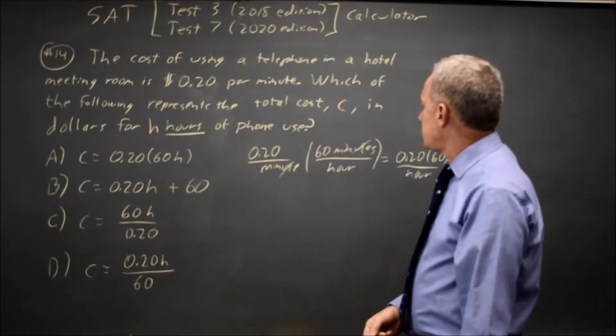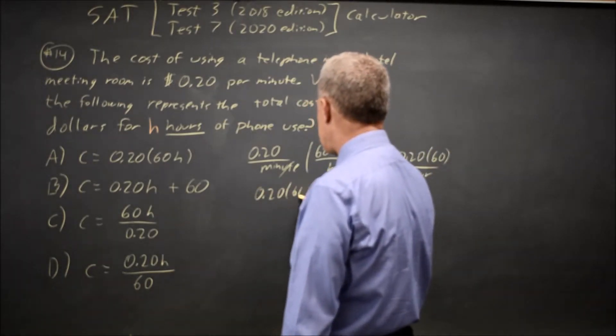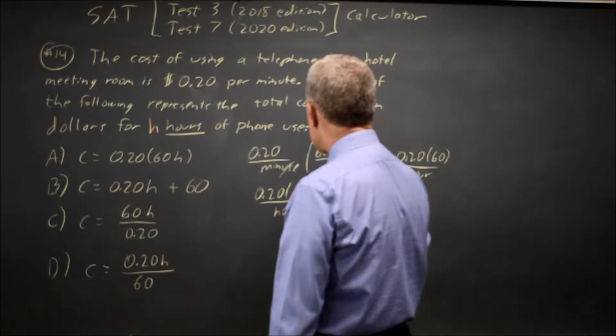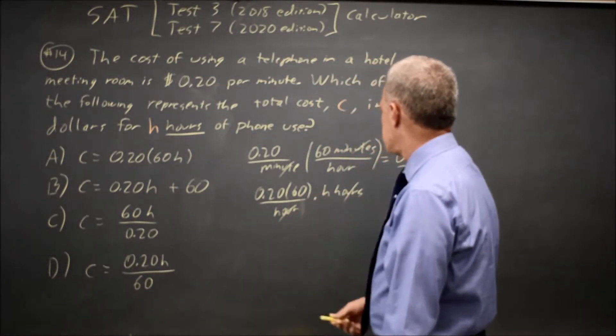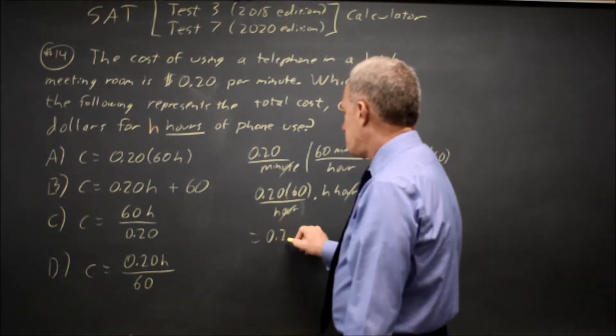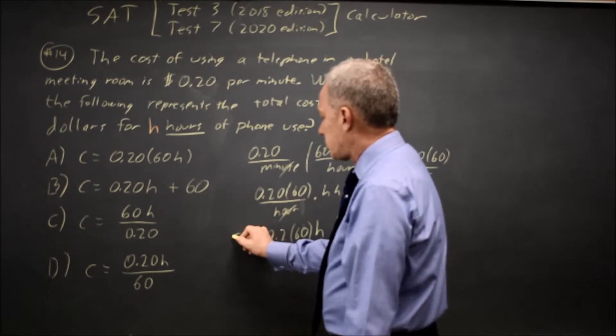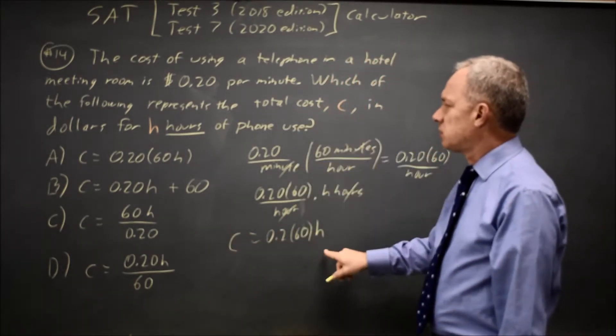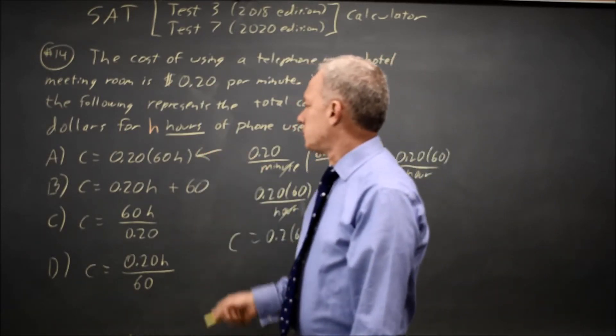And so, for h hours, it will be 0.20 times 60 per hour times h hours, because now the hours cancel. And we are .2 times 60 times h equals the total cost c in dollars for h hours, and that would be choice A.